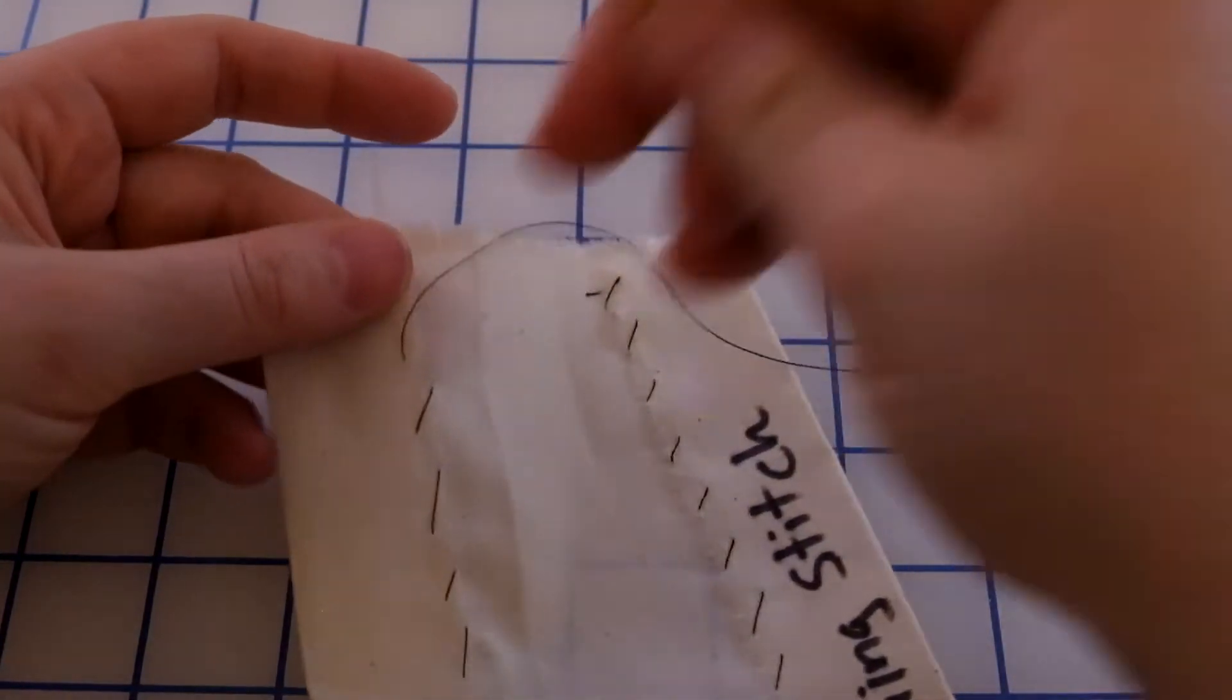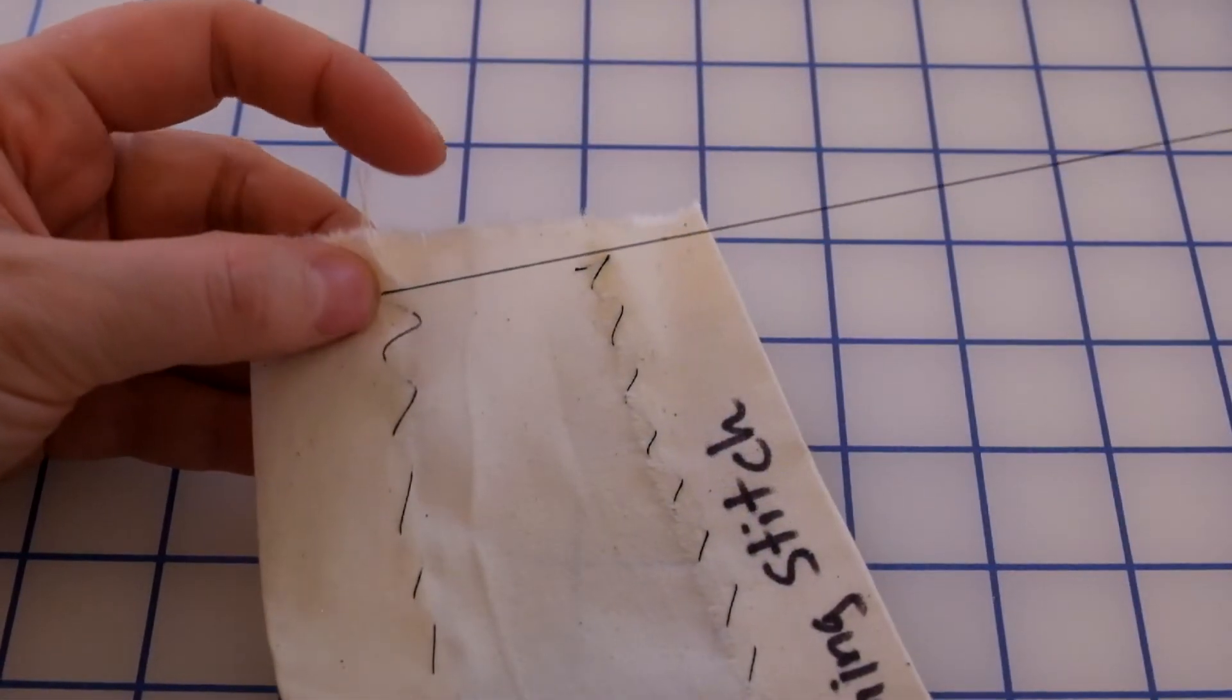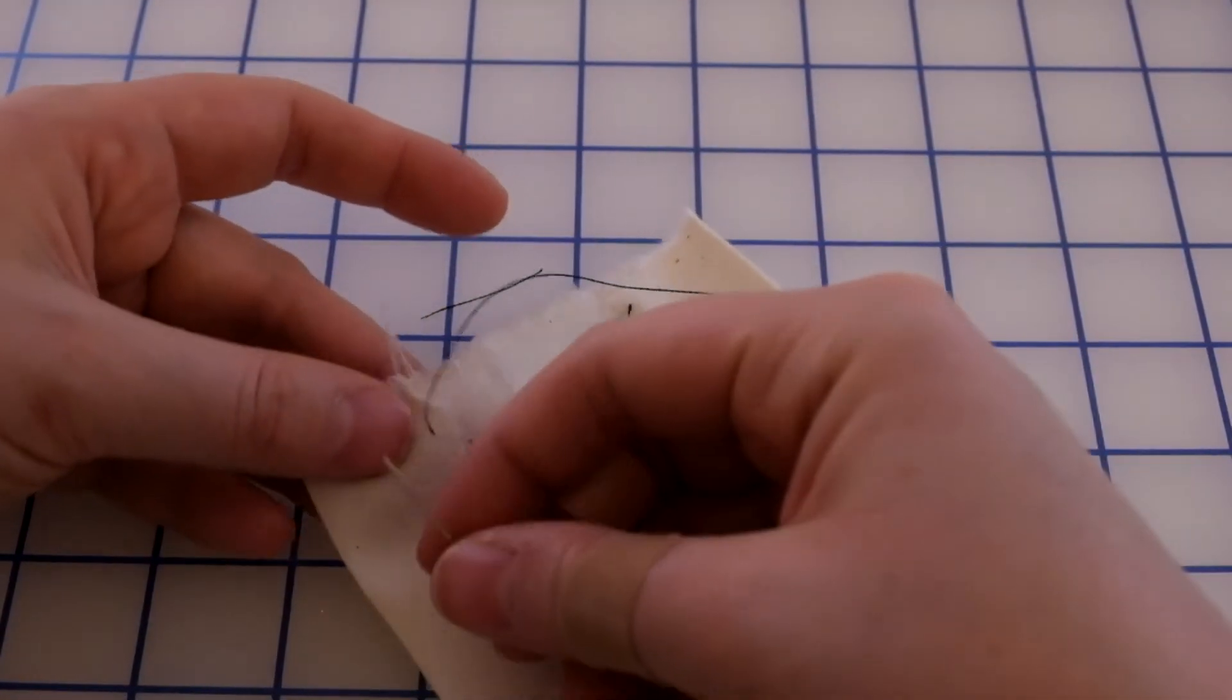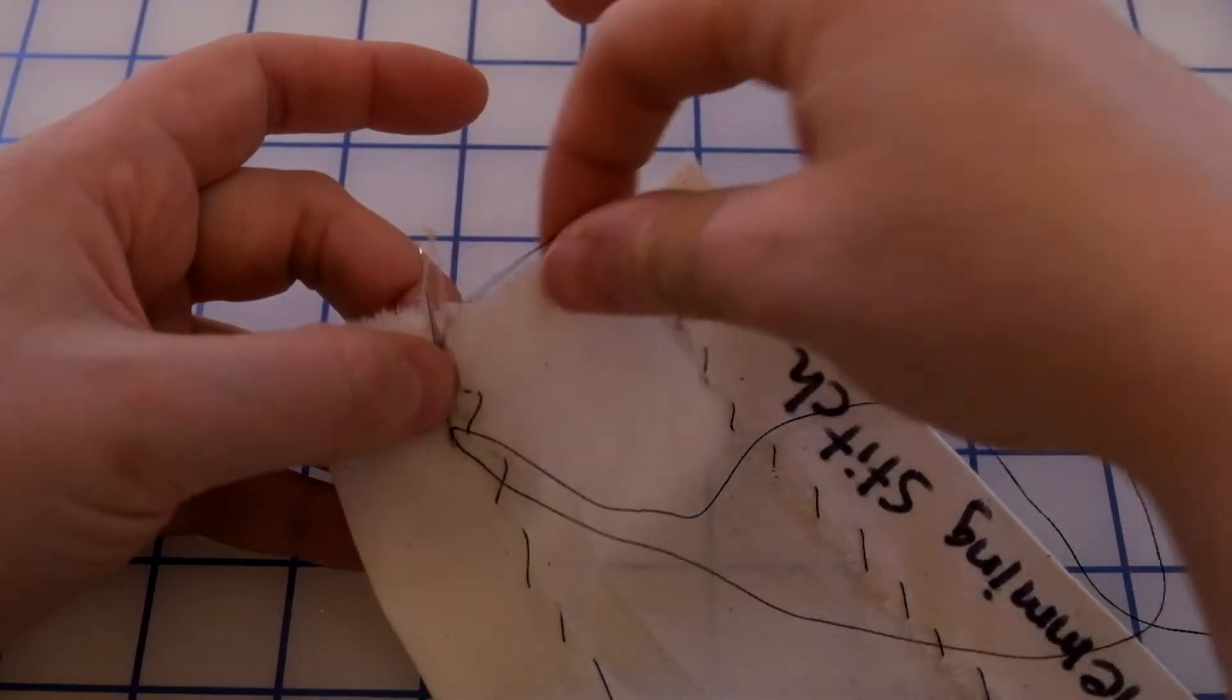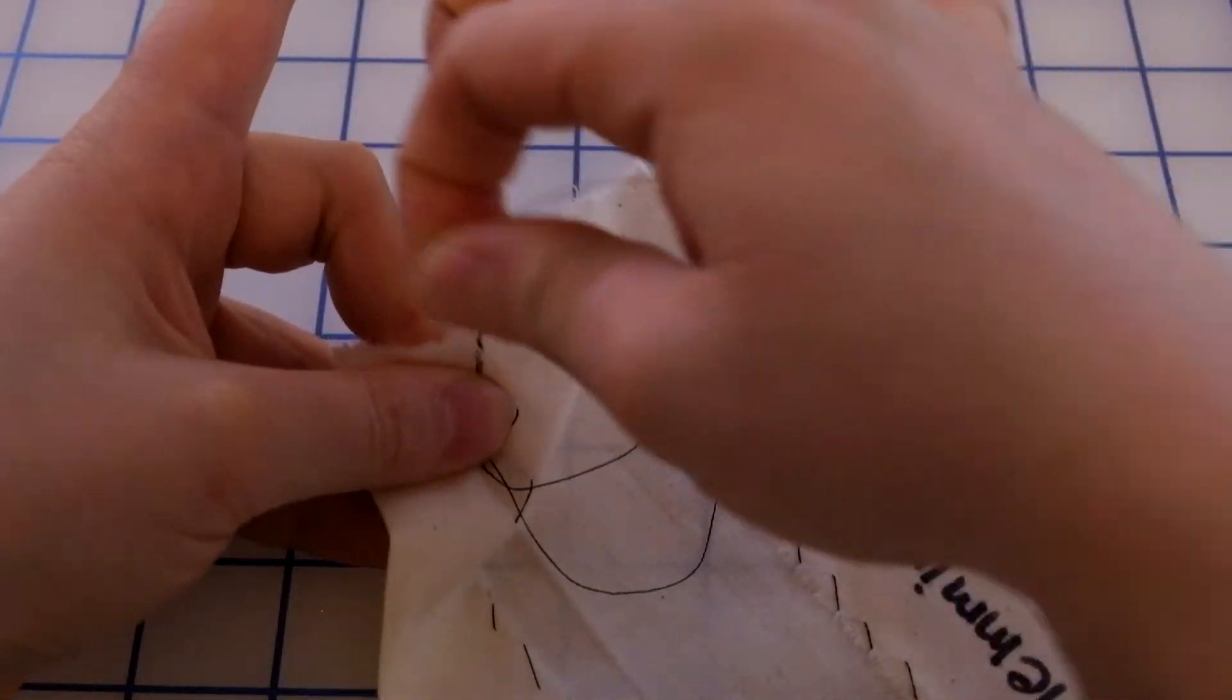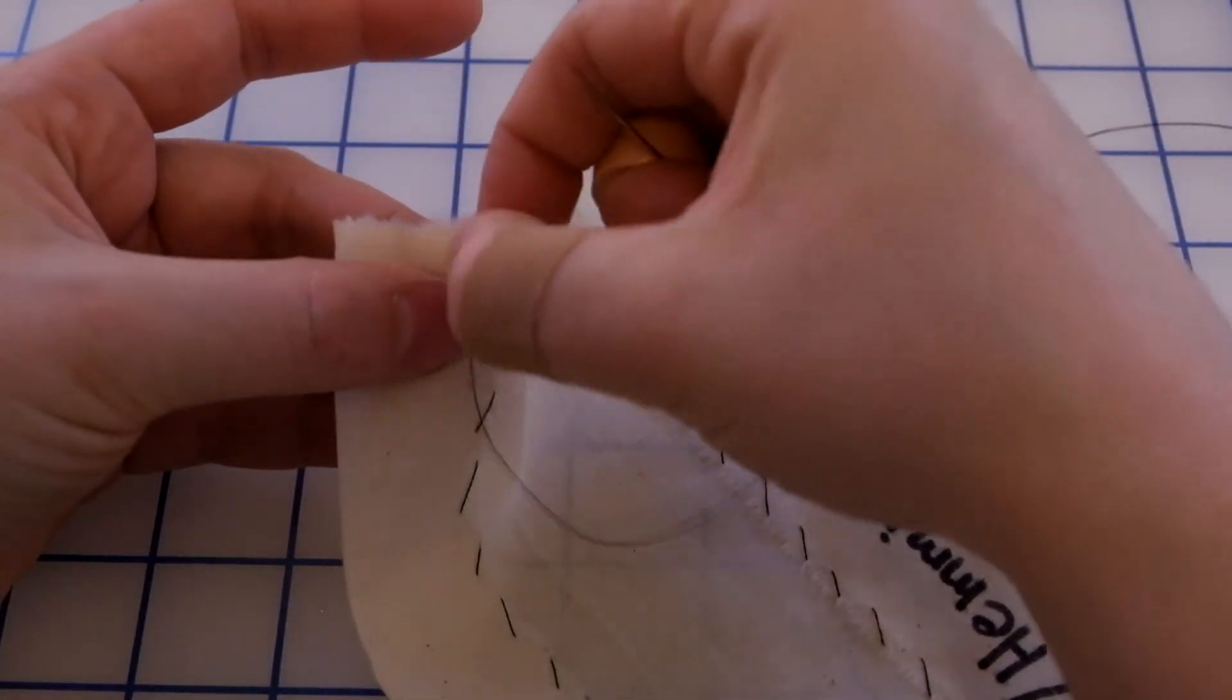Once you get to the end of your fabric or whatever you're hemming, you're going to tie off just like you did with your other stitches. You're going to take a stitch right where your thread is coming out, and you're going to take the end of your thread and wrap it around the needle, and then you're going to pull it up through, and that creates the knot.